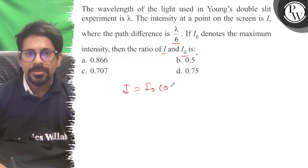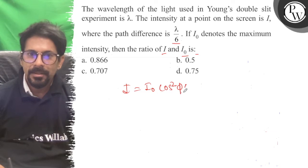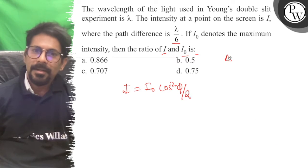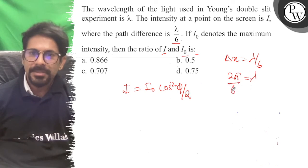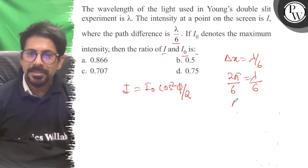is equal to I₀ cos² phi, and delta x is equal to lambda by 6. So we know that 2π is equal to lambda by 6, so 2π by lambda into lambda by 6, which becomes π by 3.